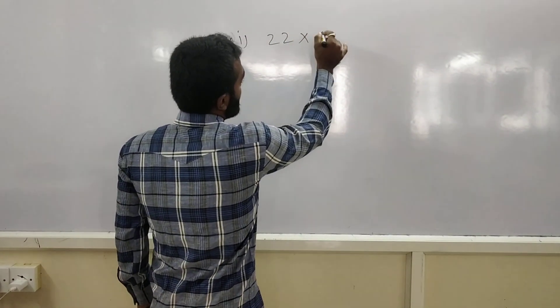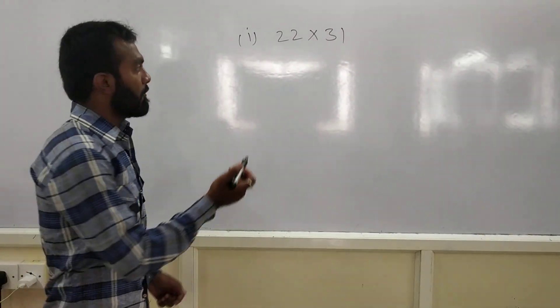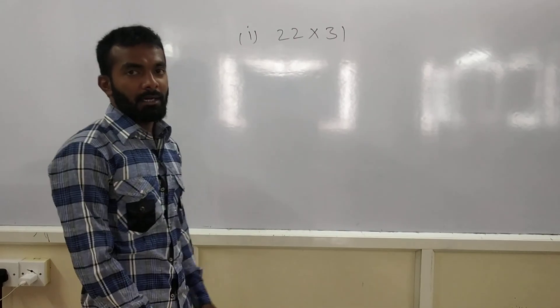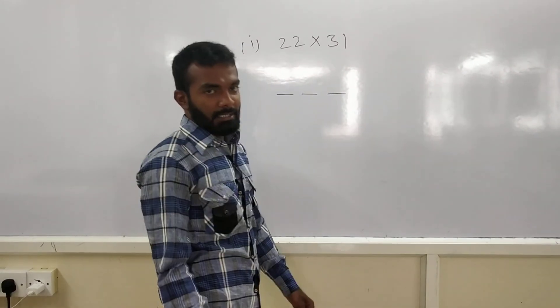Like, 22 multiplied with 31. How to multiply these 2 digit numbers? Now, whenever you are multiplying any 2 digit numbers, just put 3 dashes, 3 dashes.